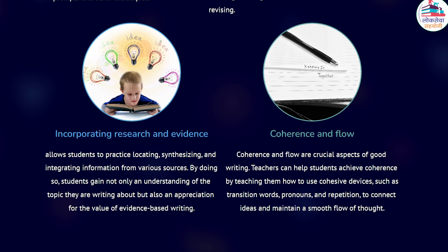Coherence and flow are crucial aspects of good writing. Teachers can help students achieve coherence by teaching them to use cohesive devices, such as transition words, pronouns, and repetition, to connect ideas and maintain a smooth flow of thought. Peer feedback, both in small groups and through writing conferences, can also improve coherence. Students receive constructive criticism and suggestions from peers, helping them identify areas where their writing may lack clarity or logical progression.